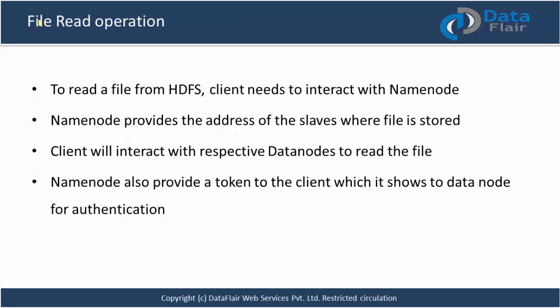One of the most important concepts is read and write operations. To understand the end-to-end flow of reading: to read a file from HDFS, the client needs to interact with the namenode, as the namenode is the centerpiece which stores the metadata. The namenode provides the address of the slave nodes where the file is actually stored. The client then directly interacts with the respective data nodes to read the file. Reading is done directly from the data node — no need for the namenode in between.